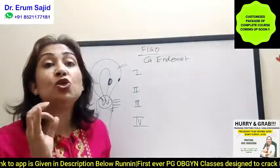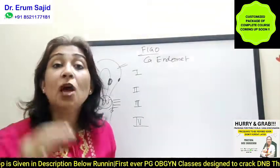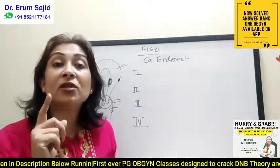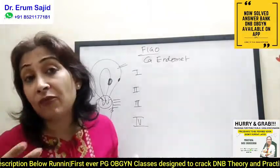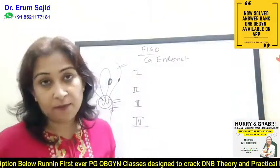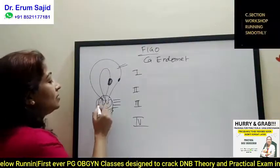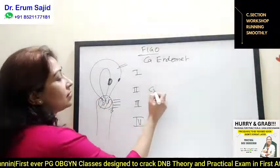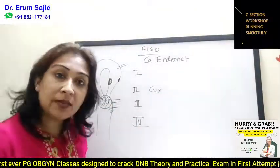Stage 2 means cervical stromal involvement, because the spread to the cervix is definitely present. So stage 2 is defined by spread to the cervical stroma.